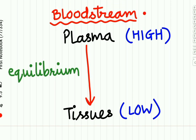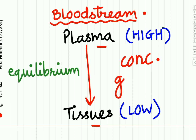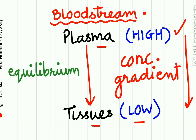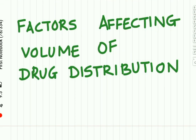Once the drug enters into the bloodstream, it is distributed from plasma to the tissues. This distribution of the drug from plasma to the tissues is in accordance with the concentration gradient of the drug. The plasma contains a high amount of drug; from this high concentration area the drug is distributed to the low concentration tissues. This transfer or distribution occurs until an equilibrium is obtained between the plasma and the tissues.